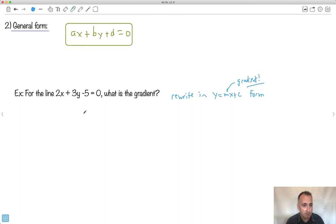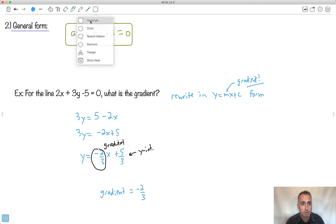So let's rewrite this thing. Let's move everything over except for the y's. My minus five goes to the right, becomes a plus five. My two x moves to the right, becomes a minus two x. So I'm going to go three y equals minus two x plus five. Now y isn't quite by itself. I'm going to have to divide everything by three. So I'm going to have y equals minus two over three times x plus five over three. This is now in y equals mx plus c form. Why is that helpful? Because this is the gradient. So the gradient equals minus two thirds.